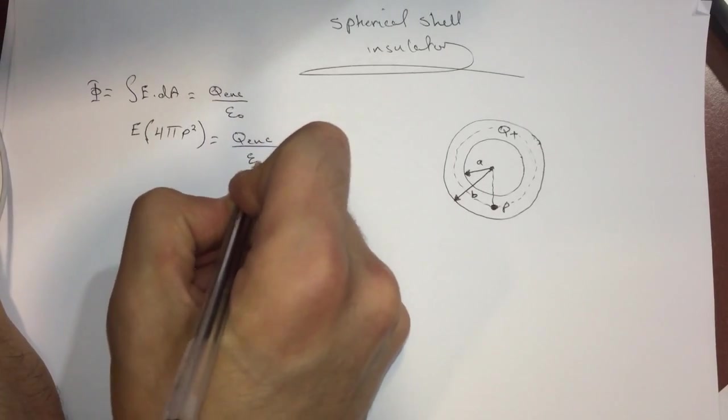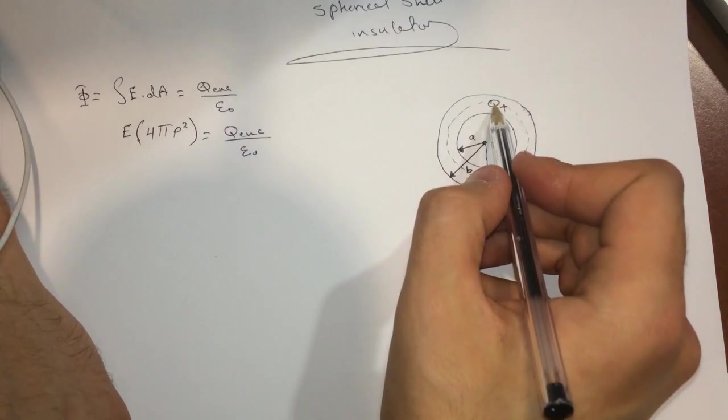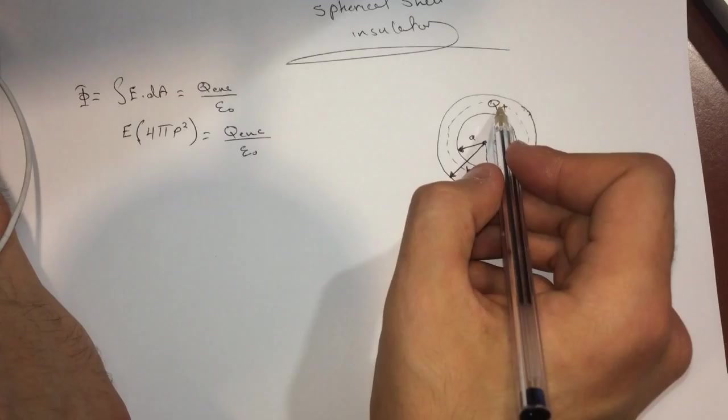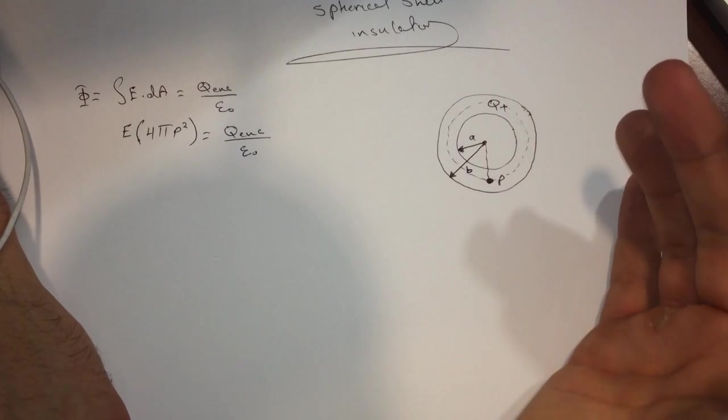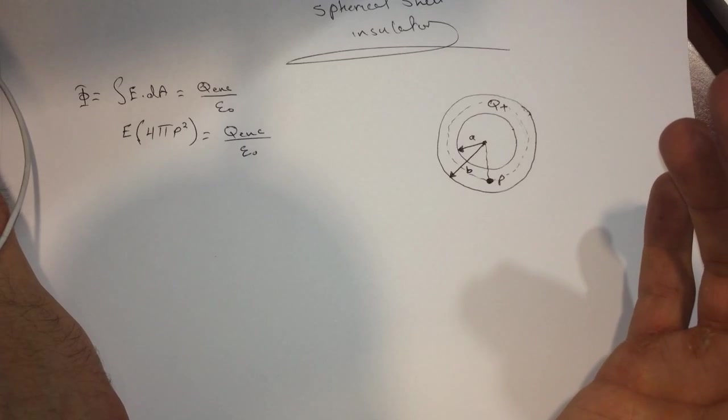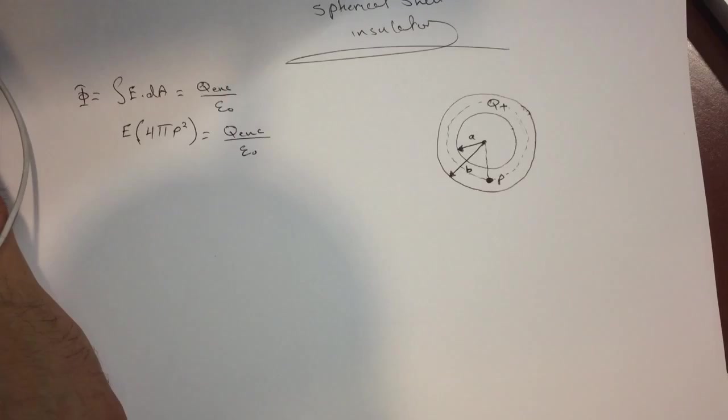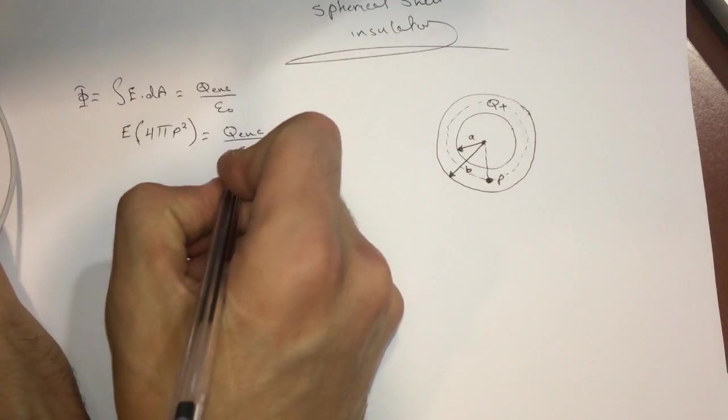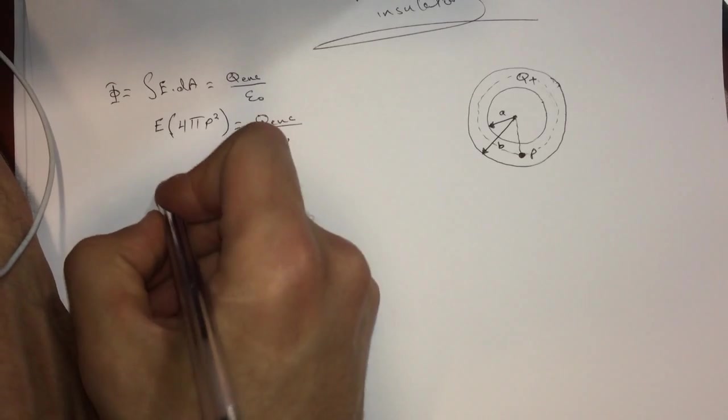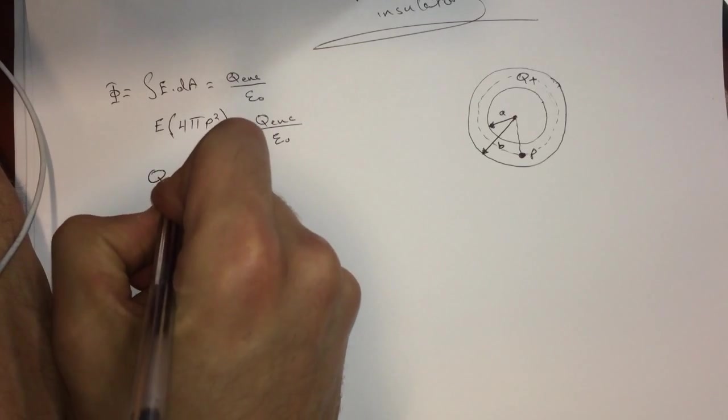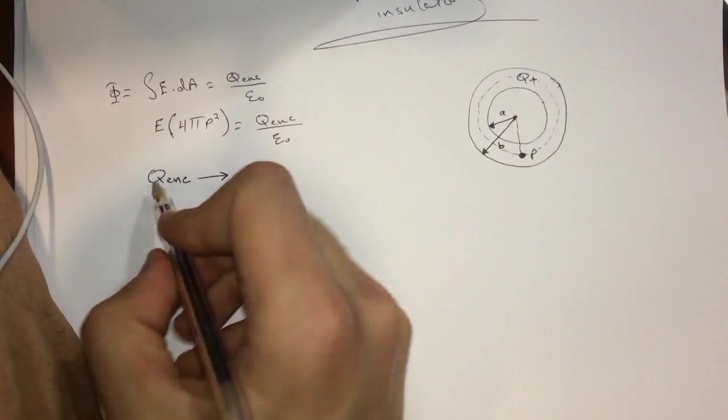So Q enclosed divided by epsilon not. Now the Q enclosed won't be the whole Q here, and since it's an insulator, the charge is uniformly distributed. Well, in the question they stated that it might not be uniformly distributed, but anyway. So yeah, let's find the Q enclosed now.